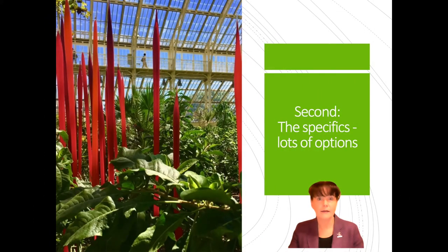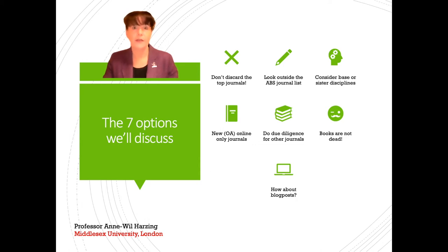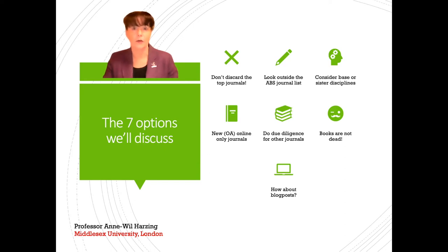Now let's look at some specific options. Here are the seven I'll be discussing: first, don't discard top journals — many love societally significant research; second, if you work in business and management, don't just focus on the ABS list; third, think about publishing in sister disciplines; fourth, look at new online-only journals; fifth, there are a range of other journals; sixth, consider books — they are by no means dead; and seventh, blog posts — a very useful option.